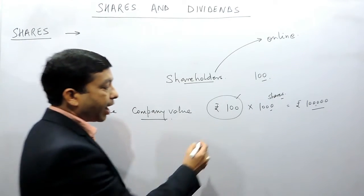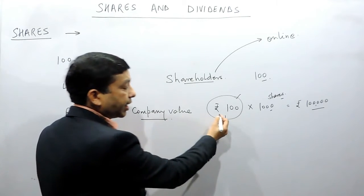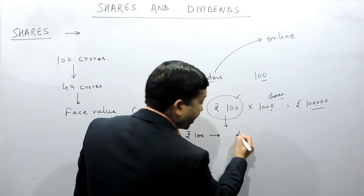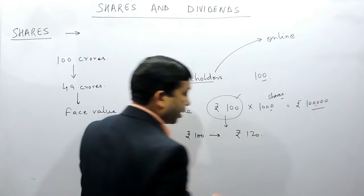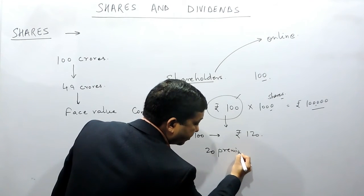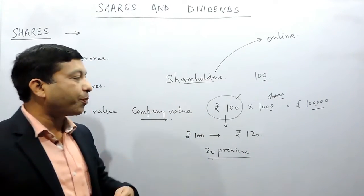Now Tata also does the research and tells that I can sell this rupees hundred share for rupees 120. That means I will take 20 rupees premium on my share. So you have to invest rupees 120 in my company but you will remain a partner for rupees 100.